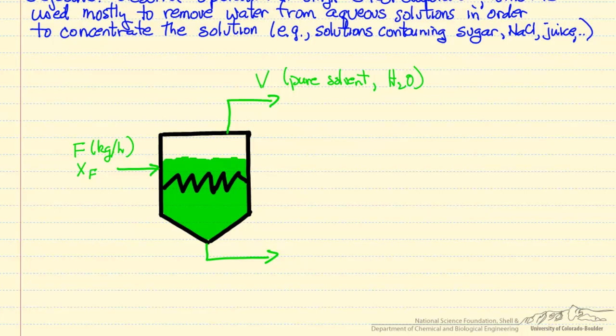And then we have the liquid, so this is the concentrated liquid. This is our objective, is to create this concentrated liquid. And so we have mass fraction of the liquid. Mass fraction of the liquid is greater than the mass fraction in the feed.